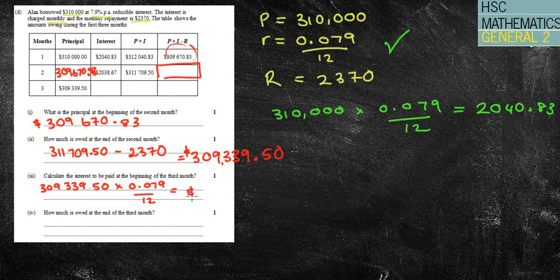How much is owed at the end of the third month? Well, I'm going to add on my principal amount from the third month, which is the $309,339.50. I'm then going to subtract my repayment of $2,370, and I'm going to get a total amount in this particular case—and I would have done some working out—but $309,005.99. And that is hopefully four out of four.